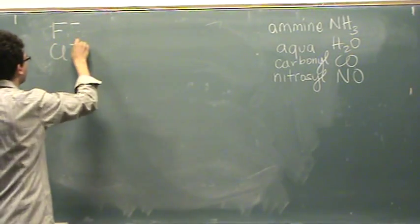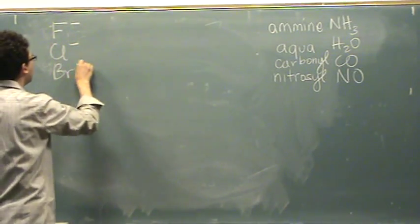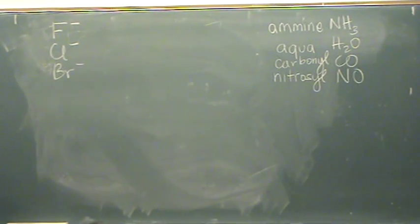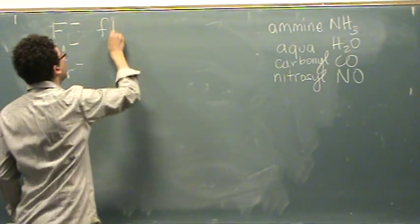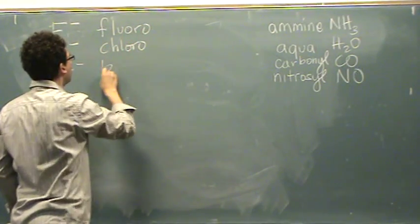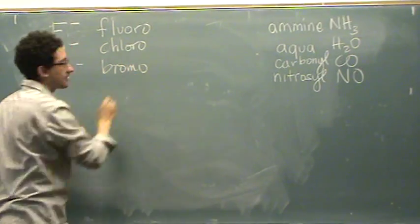So let's say the chlorine, bromine, etc. If you have anything else that has a charge, you put the suffix O at the end. So this is fluoro, chloro, bromo, etc.